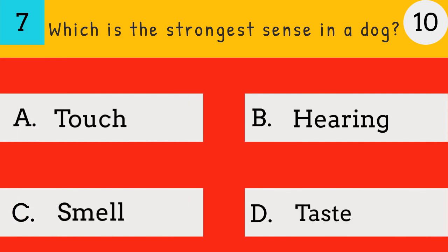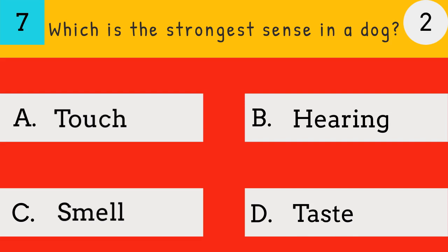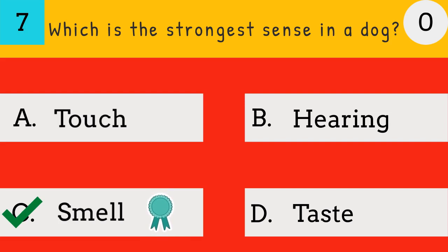Which is the strongest sense in a dog? Touch, hearing, smell, or taste? The answer is smell — smell is the strongest sense in a dog.